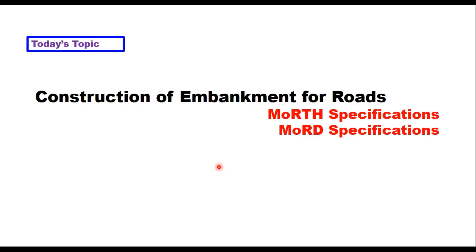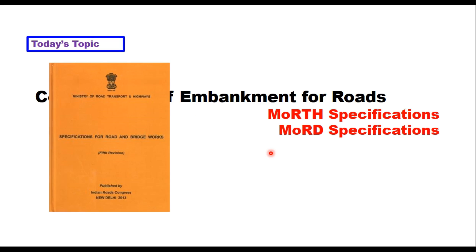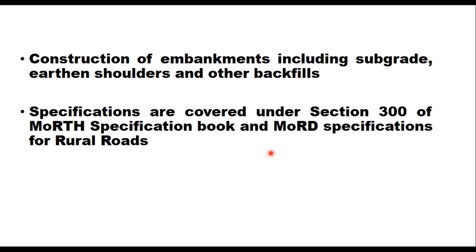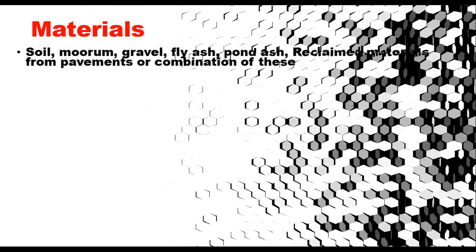Hello friends, today we are going to discuss in this session the construction of embankment for roads as given in Ministry of Road Transport and Highway Specifications of 2013 and also as given in Ministry of Rural Development Specifications for Rural Roads 2014. These specifications cover the construction of embankments including subgrade, earthen shoulders and other backfill materials and are covered under Section 300 of MORTH Specifications Book and MORD Specifications for Rural Roads. The material used in embankment or shoulder can be either soil,